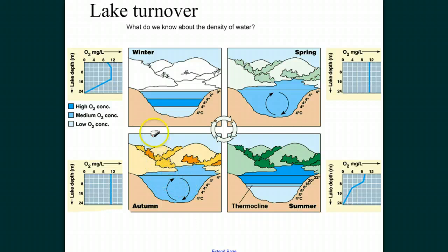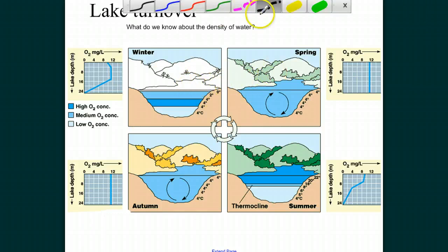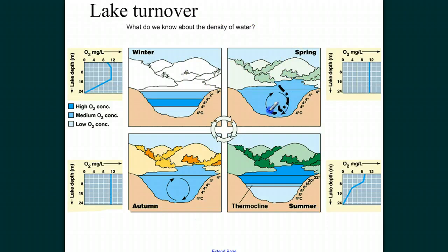Moving into winter, as it gets colder, slightly colder water sits on top because 4 degrees is more dense than 2 degrees, and eventually the top might freeze, giving us temperature stratification in the other direction. We again see a change in the relative concentration of oxygen at different depths. Then as we warm up in the spring and this water warms from zero to 2, 3, and then to 4 degrees, we get the drop again, pushing water up — so we turn the lake over twice during the year.